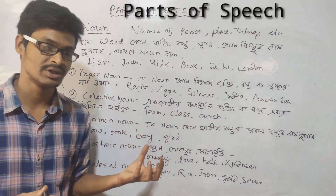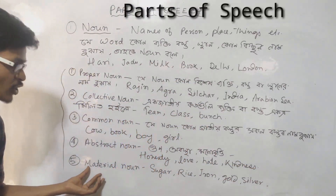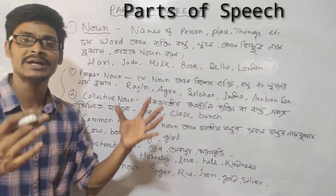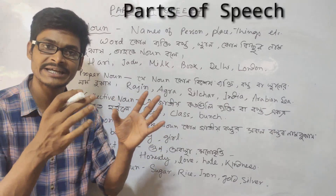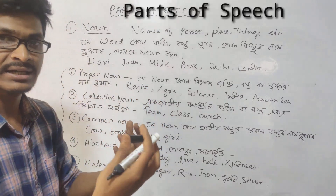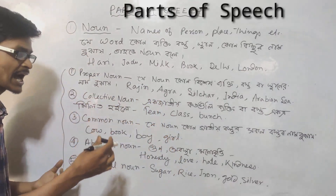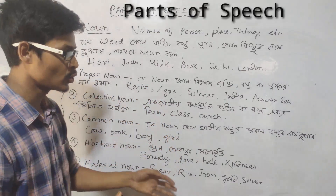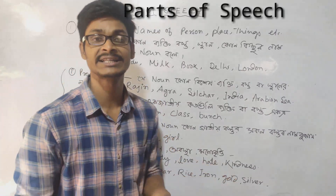Material Noun: the material or metal type. Examples: sugar, rice, iron, gold, silver — these are material nouns.